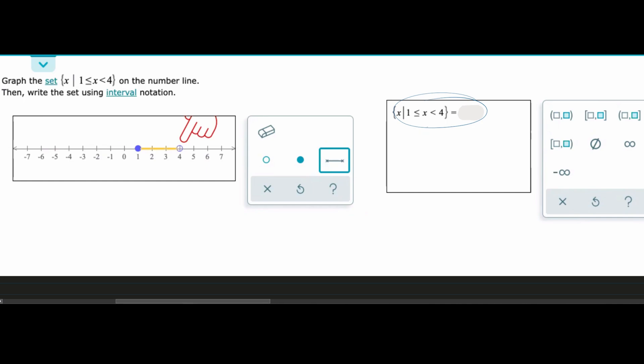So we need to write an interval notation. Well whenever we have a less than equal to or greater than equal to, we're going to use the bracket right here. And you can think of it, well we have this straight line under here and this bracket is straighter than this parenthesis, so that's how I particularly look at it.